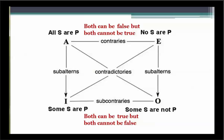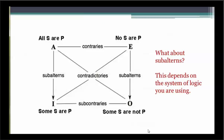Here's the square of opposition again. Across the top, contraries can both be false, but both cannot be true. On the bottom of the square, subcontraries can both be true, but both cannot be false. The relationship between subalterns isn't quite so simple. In Aristotle's system of logic, you can infer an I claim from an A claim and an O claim from an E claim. But this is not the case in modern logic, also called Boolean logic. The reason for this difference will be the subject of another tutorial.